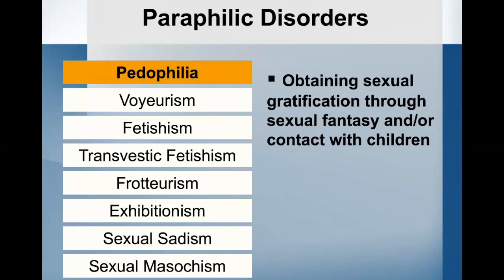The first one is pedophilia. Over a period of at least six months, there are recurrent, intense, sexually arousing fantasies, sexual urges, or behaviors involving sexual activity with a prepubescent child, generally 13 years or younger. The individual has acted on these sexual urges, or the sexual urges and fantasies cause them marked distress or interpersonal difficulty. The individual has to be at least 16 years old and at least five years older than the child from criterion A.